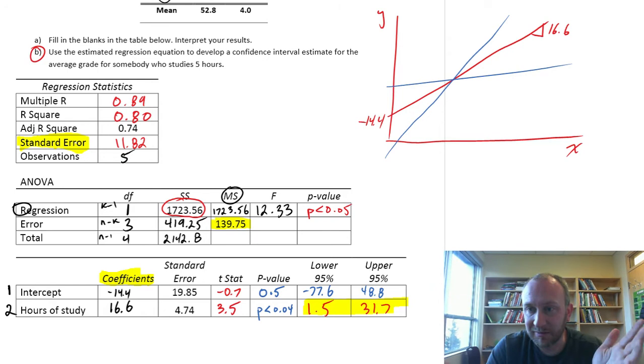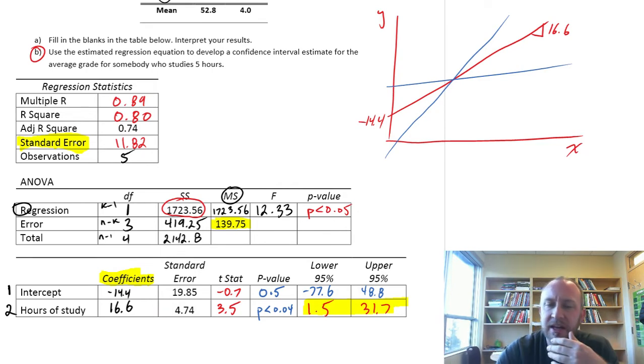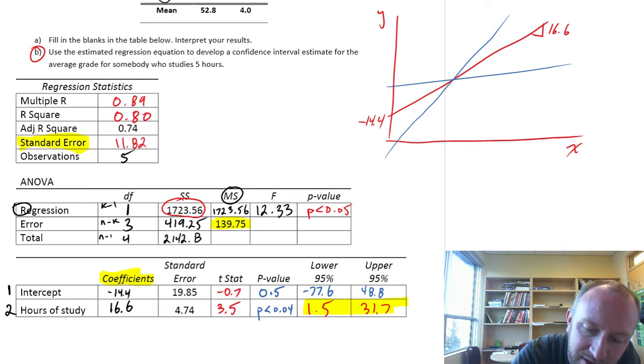like any other point estimate that we've calculated, there's some uncertainty in that. Now, I've intentionally drawn these to cross at the same point, because of the relationship between that y-intercept and the slope.